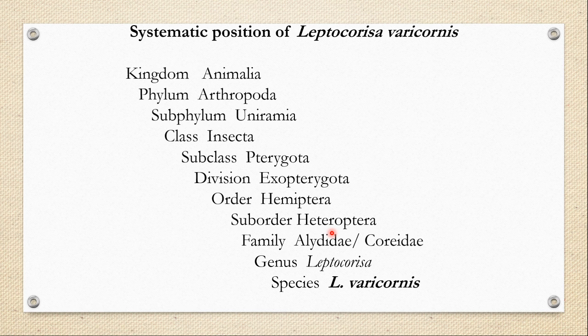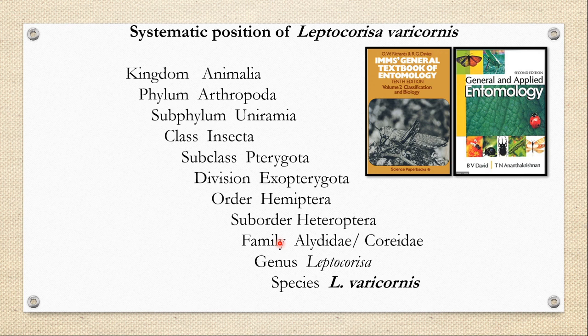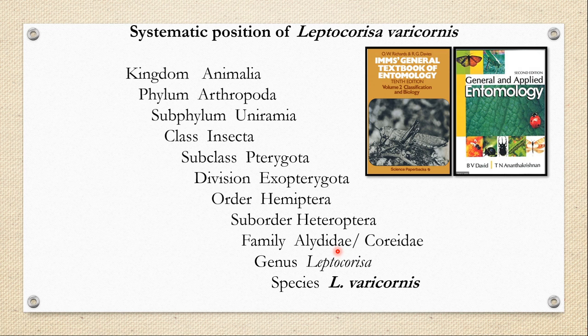The proximal part of the forewing is leathery and thick, and the apical part of the forewing is membranous. It belongs to family Alydidae because it is elongated in body shape. Most authentic entomology books include Leptocoryza variconis under family Alydidae, but many popular economic entomology books and research papers include the genus under family Coreidae. However, insects of family Coreidae are more oval in shape, whereas Leptocoryza variconis is more elongated. Note that family Alydidae and family Coreidae are closely related and both belong to superfamily Coreoidea.